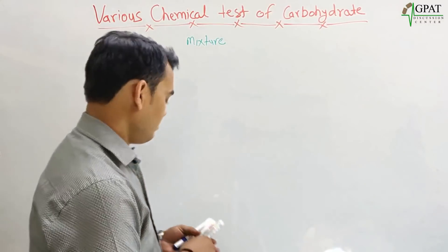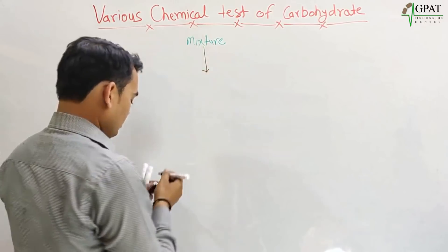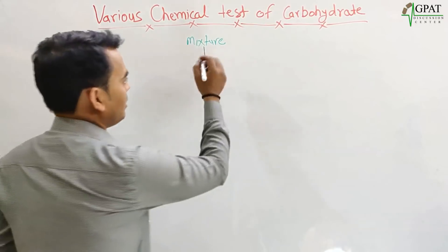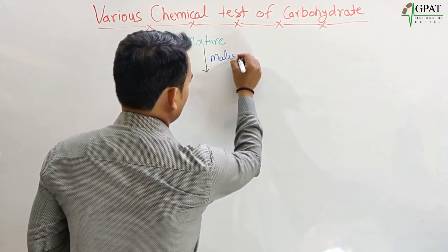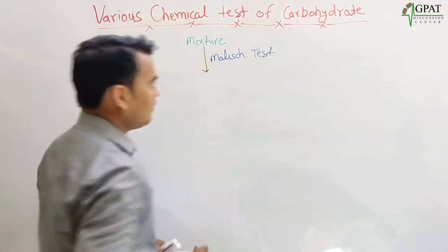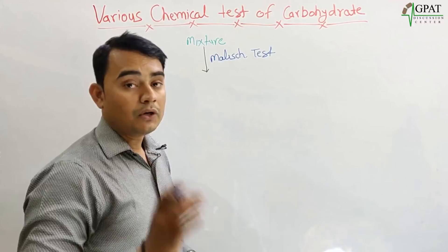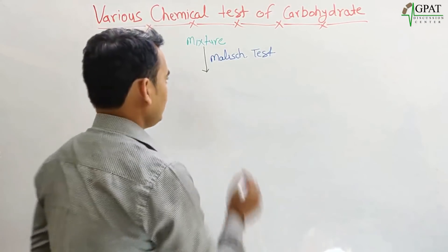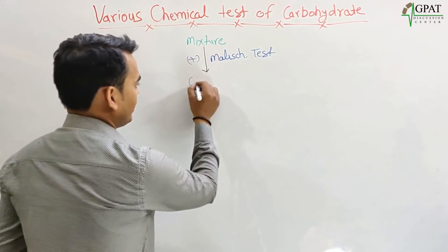On this mixture, we apply the Molisch test. If any substance gives a positive Molisch test, that determines that this is a carbohydrate. So if the Molisch test is positive, then this is a carbohydrate.